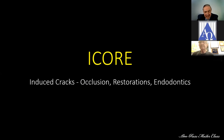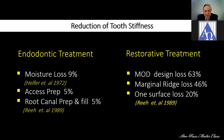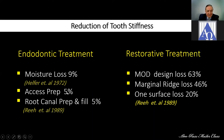We're looking into the issue of tooth stiffness. Does endodontic treatment make teeth weaker? The answer is no. Look at the statistics. When you do endo, you lose only 9% moisture. Access preparation: 5%. Root canal treatment causes a loss of only 5% of the strength of the tooth. But restorative dentistry — an MOD restoration causes a loss of 63% of tooth stiffness.